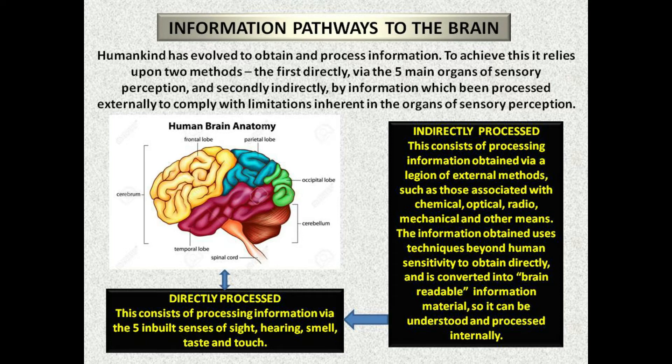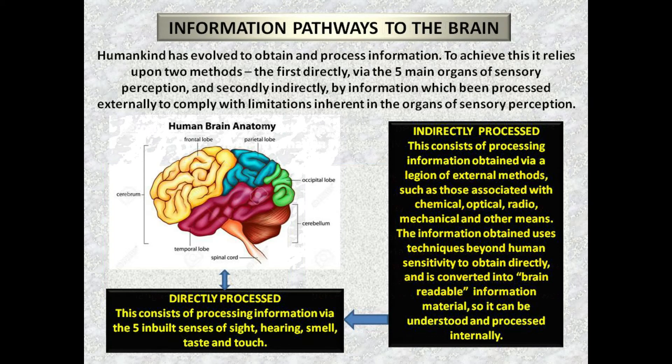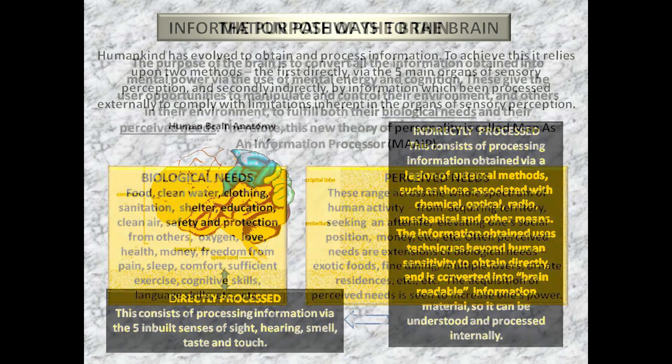Directly processed: this consists of processing information via the five inbuilt senses of sight, hearing, smell, taste and touch. Indirectly processed: this consists of processing information obtained via a legion of external methods, such as those associated with chemical, optical, radio, mechanical and other means. The information obtained uses techniques beyond human sensitivity and is converted into brain-readable material so it can be understood and processed internally.